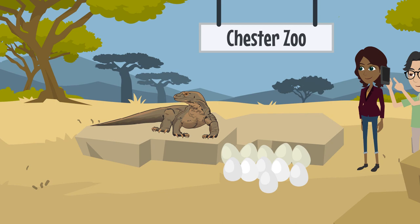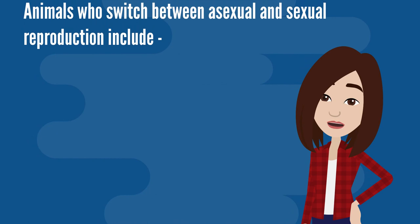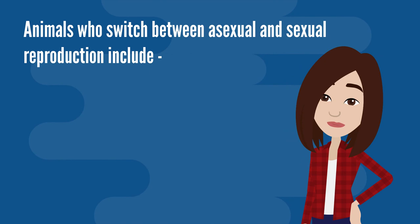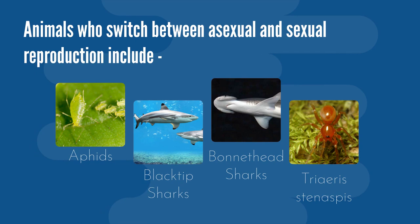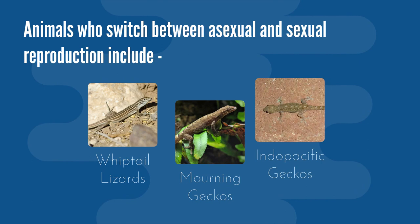Asexual reproduction, or Parthenogenesis, has been seen in many other animals, who often switch between asexual and sexual reproduction. These include aphids, blacktip sharks, bonnethead sharks, and a species of spider that has been found in subtropical and tropical parts of the world — they are believed to be parthenogenic since no male species has ever been found. Parthenogenesis has also been seen in New Mexico whiptail lizards, mourning geckos, and Indo-Pacific geckos, known as fox geckos, just to name a few.